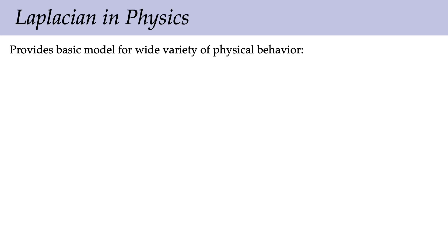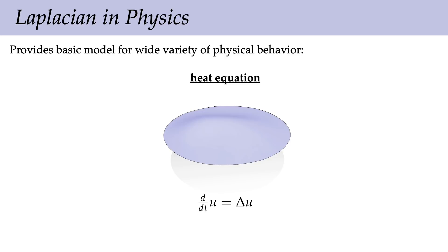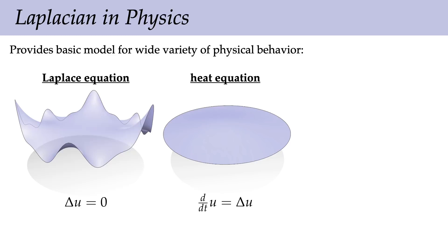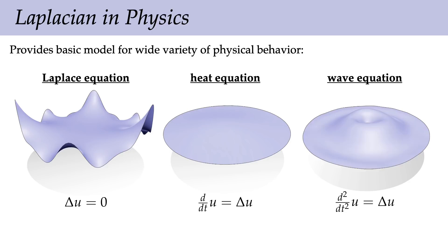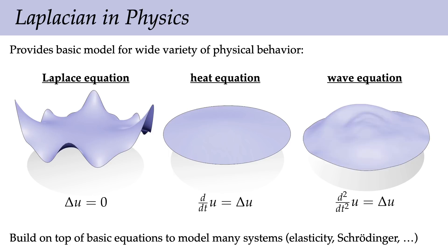In physics, the Laplacian provides a basic model for a wide variety of physical behavior. One important equation is the heat equation, which describes how temperature diffuses throughout an environment over time. If we then imagine that the temperature at the boundary is fixed and consider the equilibrium distribution of temperature, we get the Laplace equation. We can also use the Laplacian to model the behavior of waves—how displacements propagate throughout a material. The Laplacian shows up in elasticity, quantum mechanics, and everywhere.